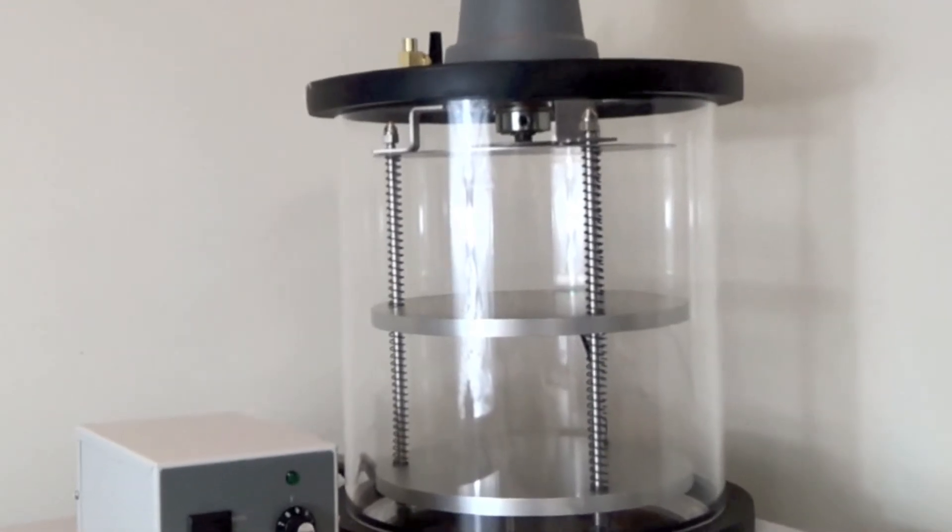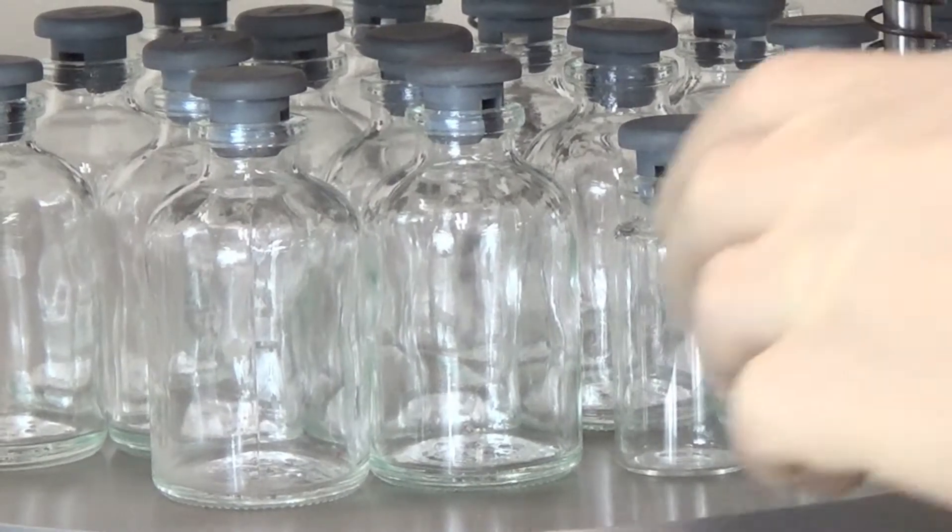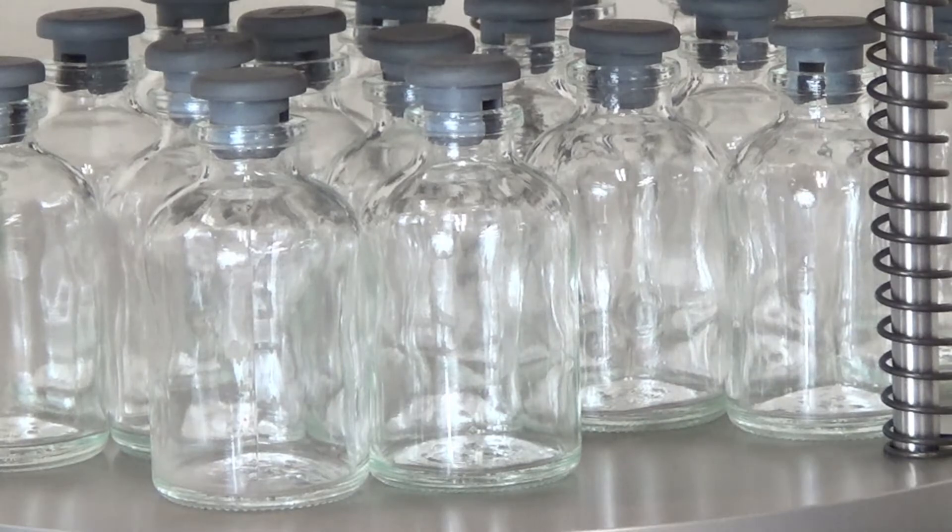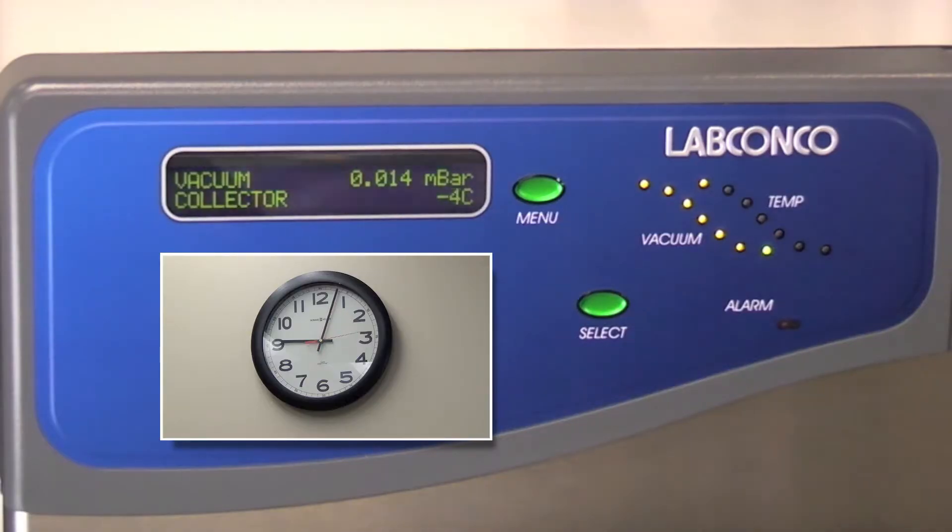Using the clear stoppering chamber is easy. Pre-freeze your samples in vials that are partially stoppered. Start the freeze dryer in manual mode and wait until the refrigeration reaches negative 40 degrees Celsius.